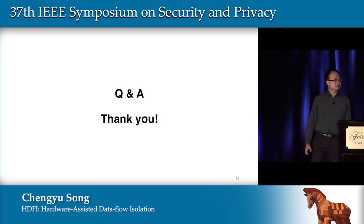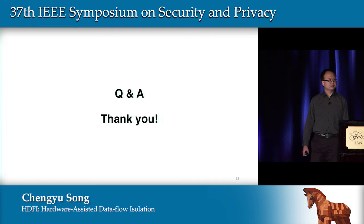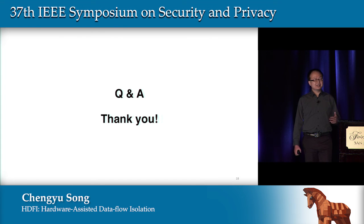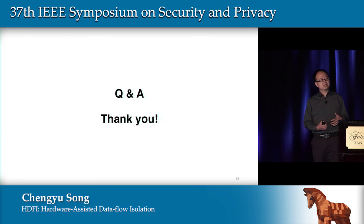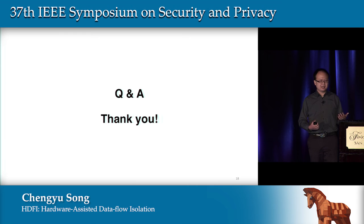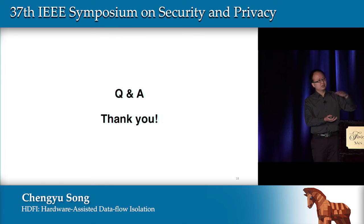Audience question: On your slides you gave a number of different uses for the extra tag bit. Are those uses actually compatible with each other, and if not, how do you deal with the fact that one compilation uses the bit for one purpose and some other separately compiled code uses it for a different purpose? Speaker: I think they are compatible. We use HDFI to tag sensitive data, and all sensitive data have different meanings. For example, return addresses will never overlap with Vtable pointers or function pointers, and return addresses will never overlap with, say, UID in the kernel. Looking at memory, all the sensitive data will be disjoint, so all these applications can be combined and will not affect each other.